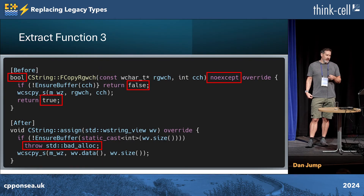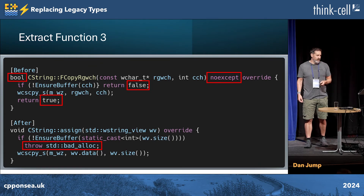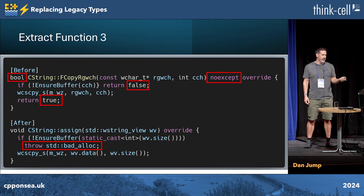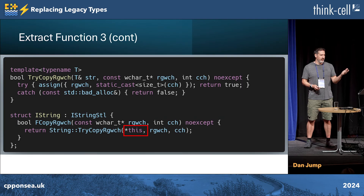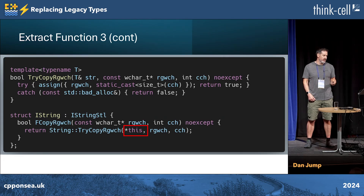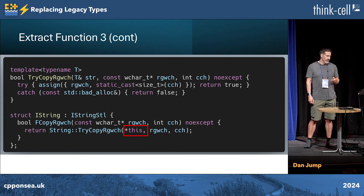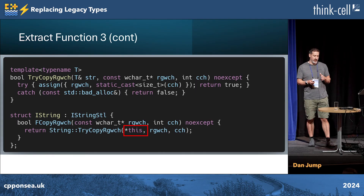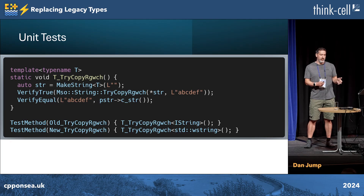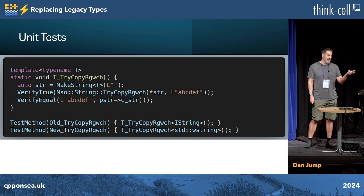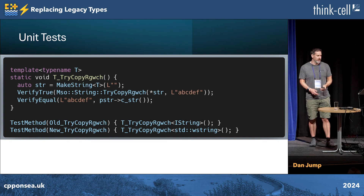One last example: fcopy_rgwch, which is essentially just assign. I've implemented assign on the concrete class, which takes a string_view and basically does what the old code was doing before. But instead of returning a bool, we throw std::bad_alloc if our ensure-buffer function fails. Then to maintain the behavior in the flat function try_copy_rgwch, we catch that bad_alloc and turn it back into the bool. The interface just calls the flat function passing itself. This part is done by hand — it's fairly mechanical, but you could still have a typo. So I updated the unit tests to work against both cases as well.